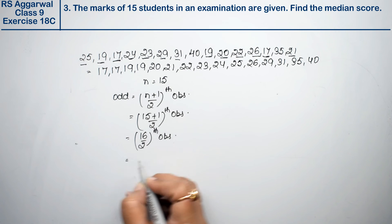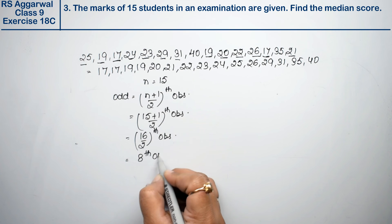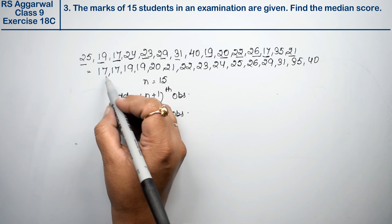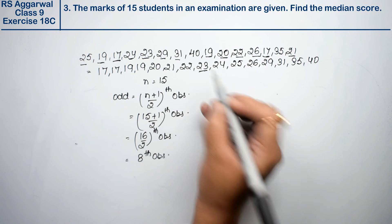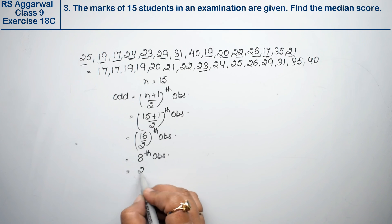So which is the 8th observation? One, two, three, four, five, six, seven, eight - twenty-three. That means 23 is the median score. Answer.